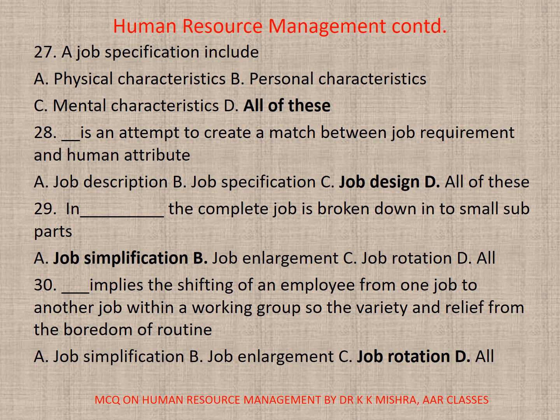Question 29. In job simplification, the complete job is broken down into small sub-parts. Question 30. This implies the shifting of an employee from one job to another job within a working group, providing variety and relief from the boredom of routine. The correct option is C. Job rotation.